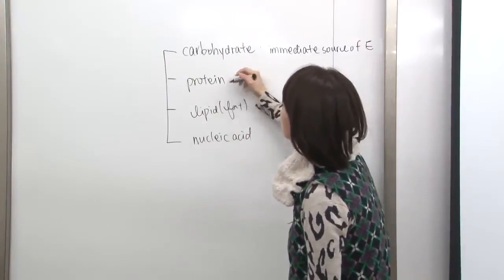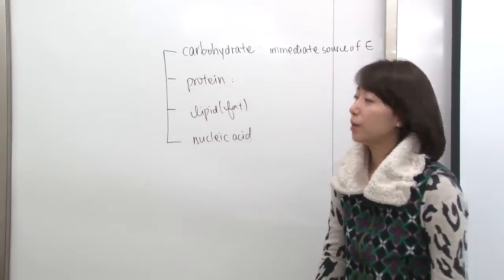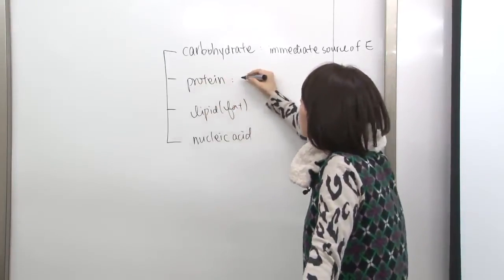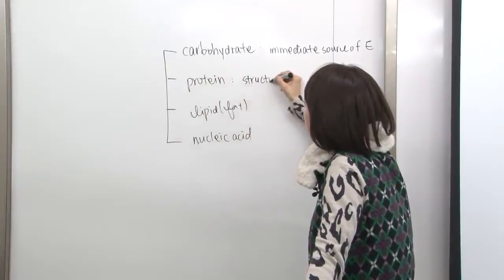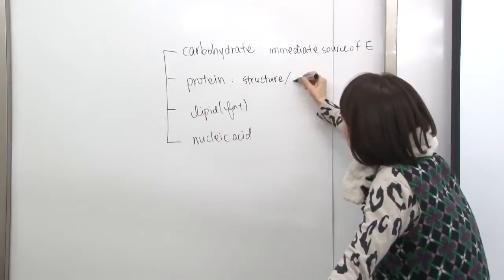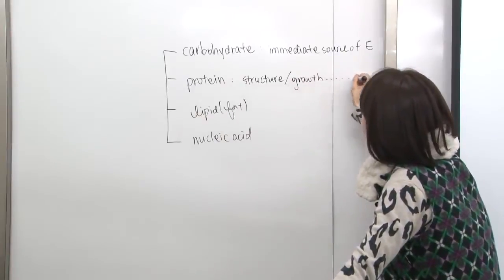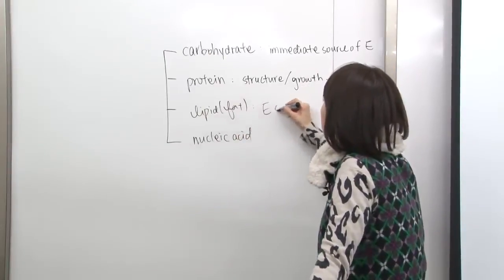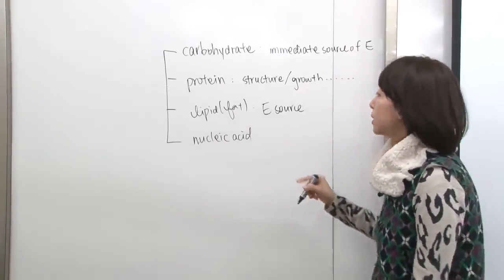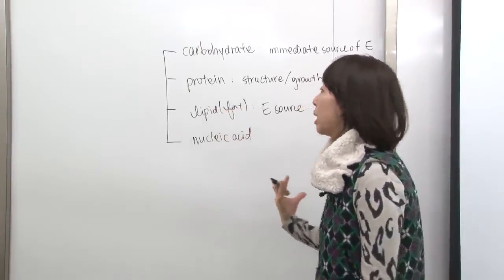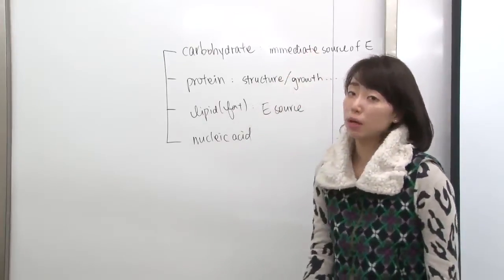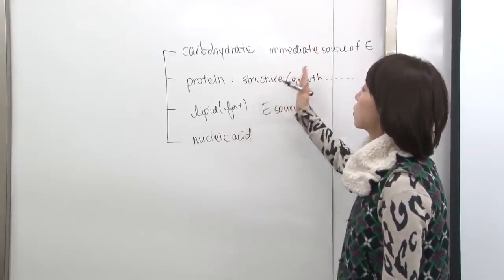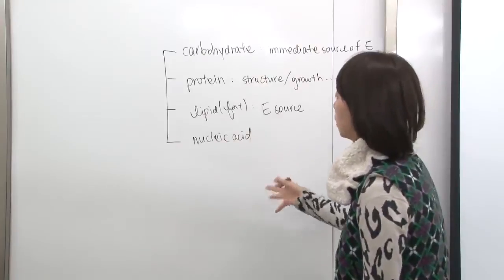Protein contributes to the structure of a cell — if you look at the cell, you have so many proteins and enzymes. Protein contributes to structure and growth. Lipid is another energy source that is stored in the body as body fat. If there is a lack of carbohydrate, the next energy source used is lipid.